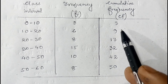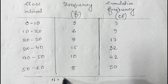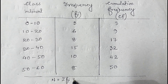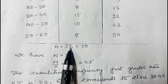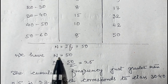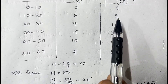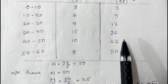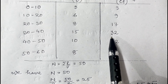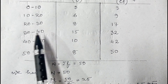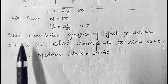Since the last cumulative frequency is 50, n — which is the summation of all frequencies — equals 50. Dividing n by 2 gives 25. Now looking at the cumulative frequencies, the value which is 25 or greater than 25 is 32, and 32 corresponds to class interval 30 to 40, so 30 to 40 is the median class.